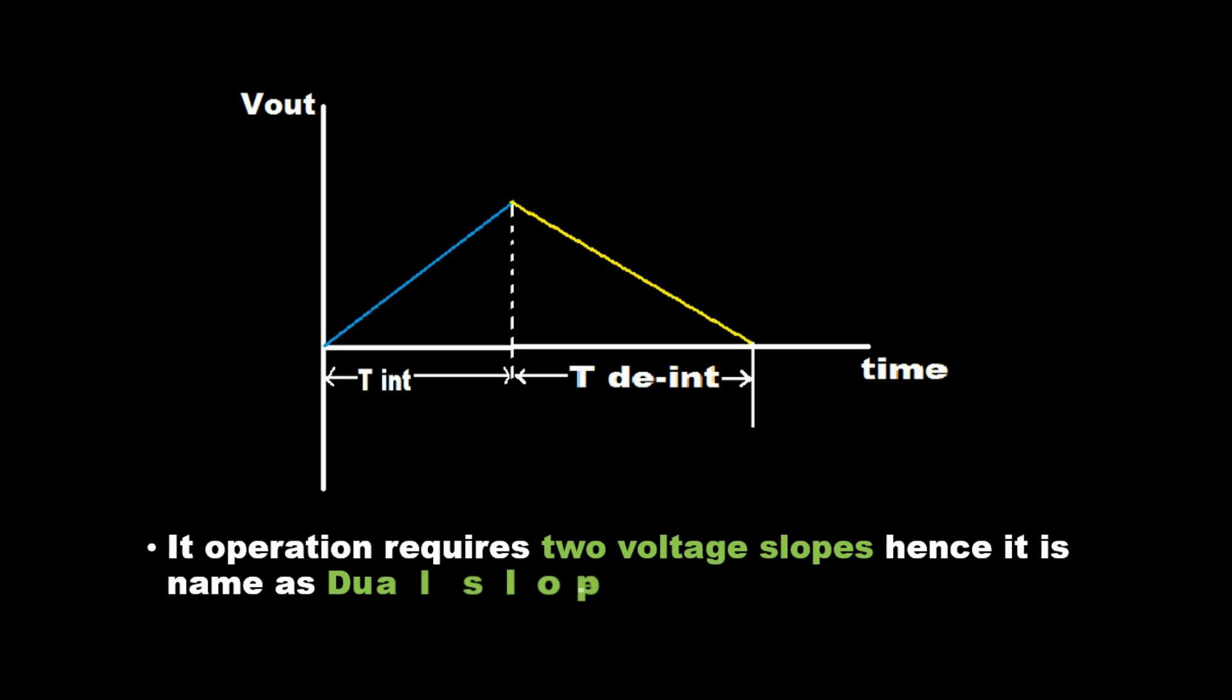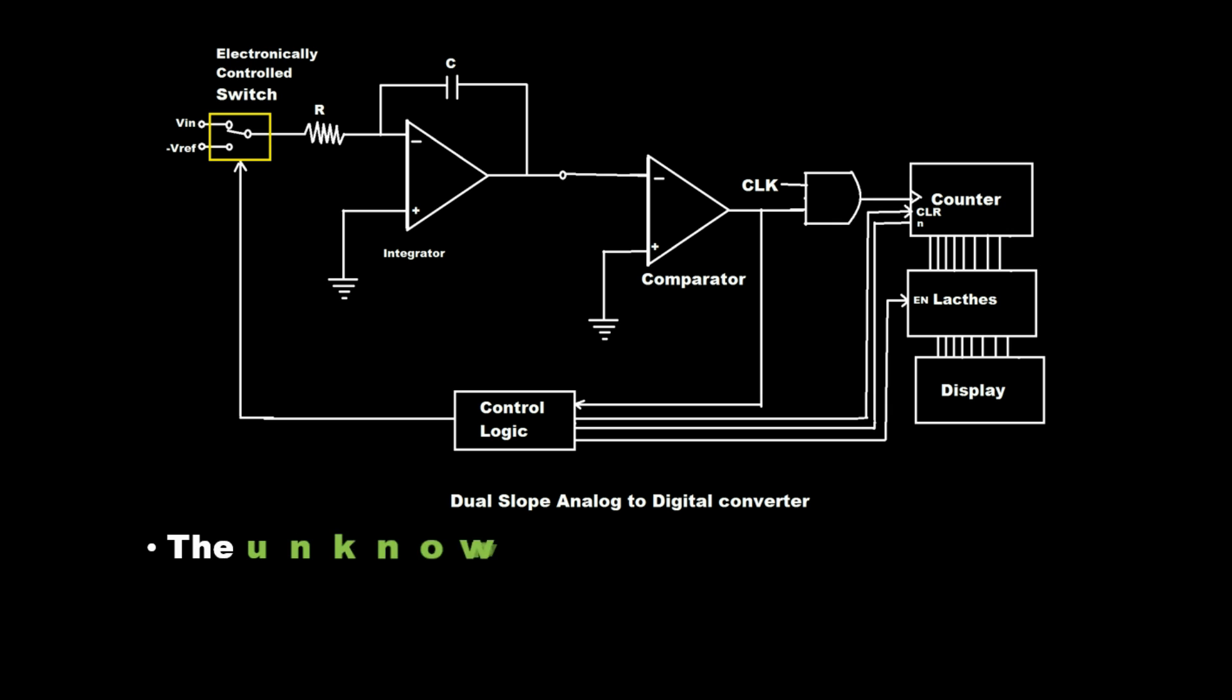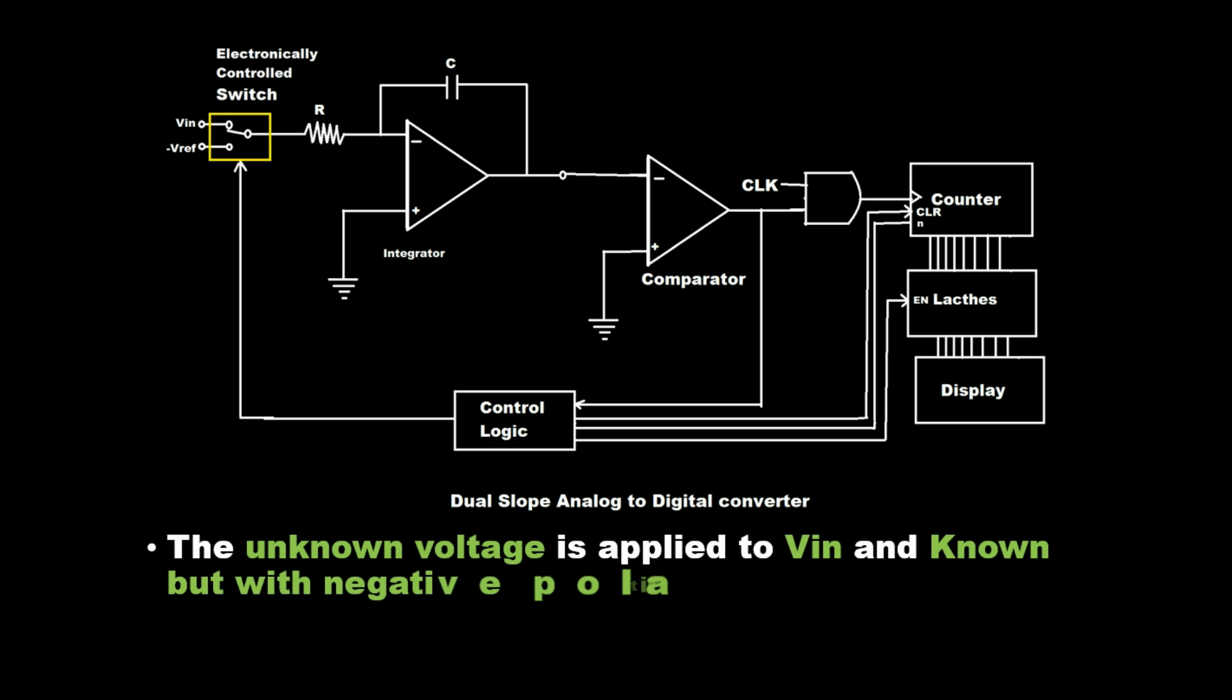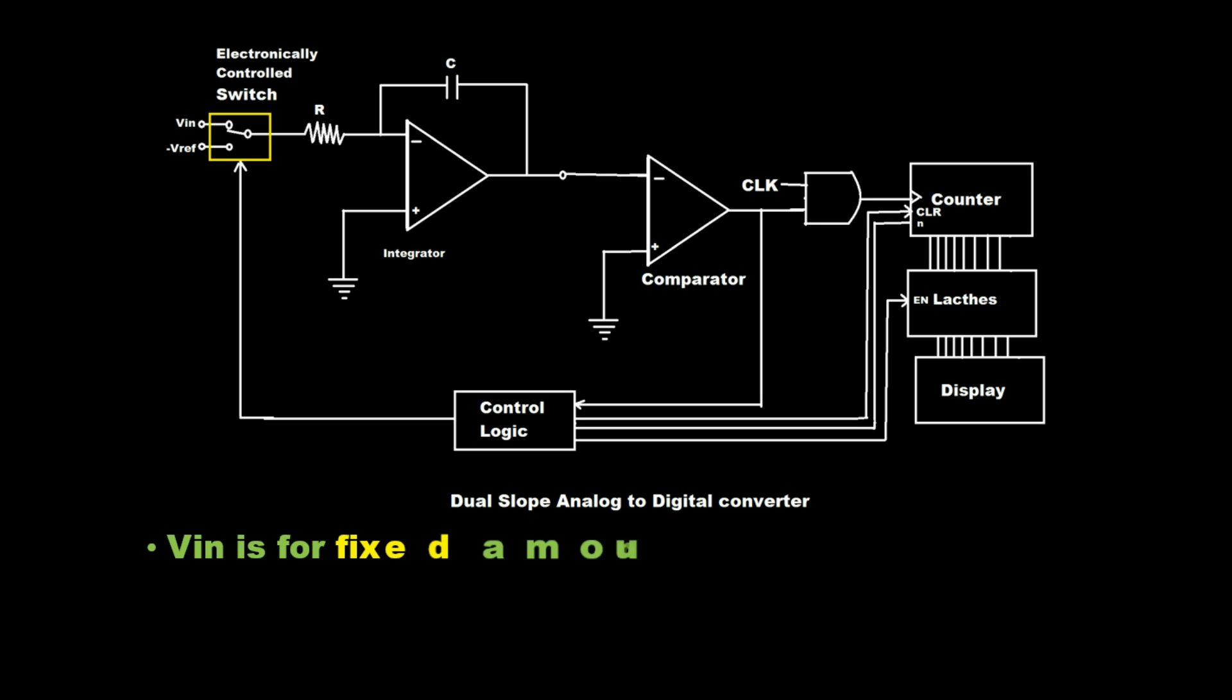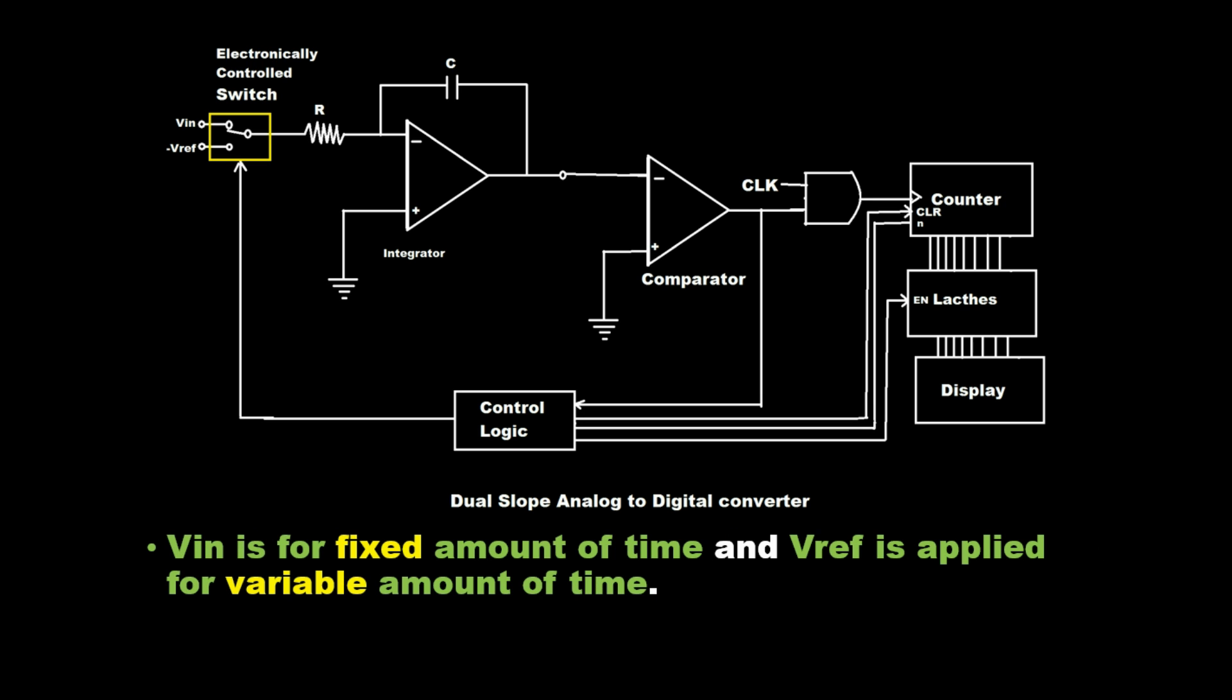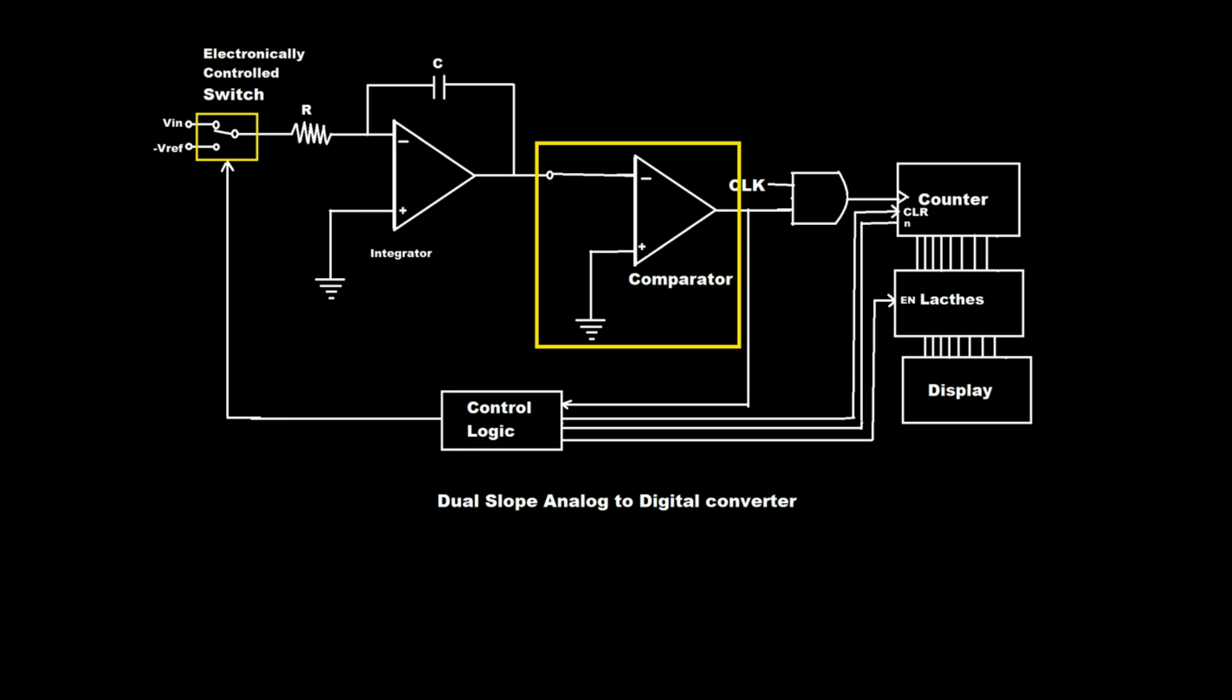Its operation requires two voltage slopes hence it is named Dual Slope. The unknown voltage is applied to VIN and a known but negative polarity voltage is applied to VREF. VIN is applied for a fixed amount of time and VREF is applied for a variable amount of time.